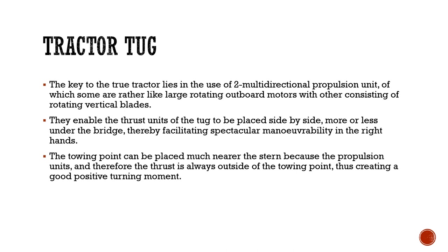The key to the true tractor tug lies in the use of two multi-directional propulsion units — some are like large rotating outboard motors, while others consist of rotating vertical blades. These enable the thrust units to be placed side by side more or less under the bridge of the tug, facilitating spectacular maneuverability in the right hands. The towing point can be placed much nearer the stern because the propulsion units and their thrust are always outside of the towing point, creating a good positive turning moment.